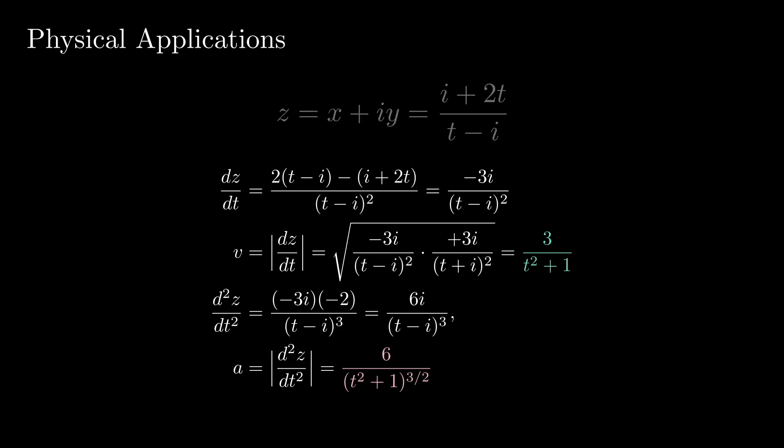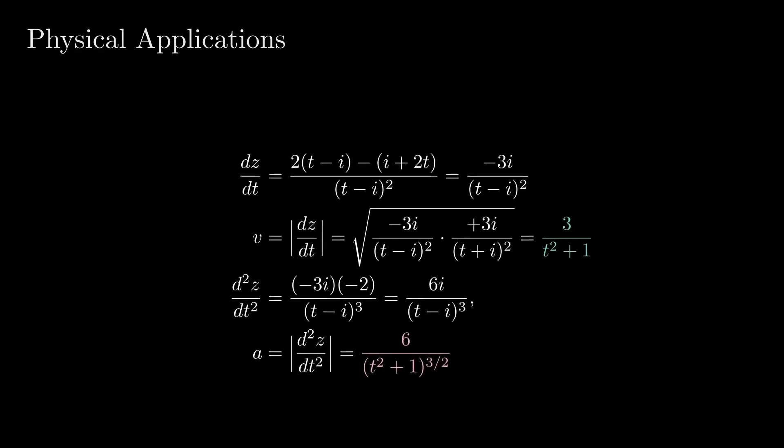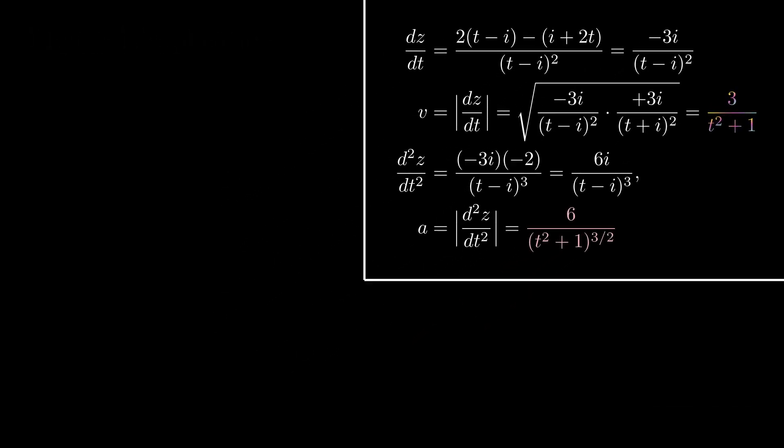which is dz dt, but with all the signs in front of the i component switched. The acceleration is then just the derivative of velocity.